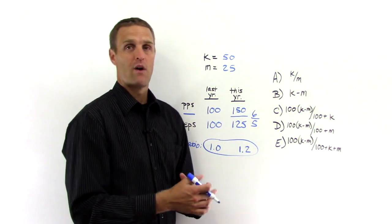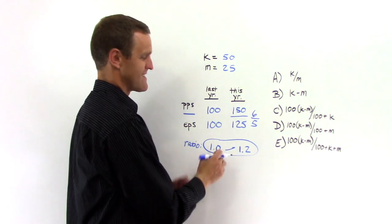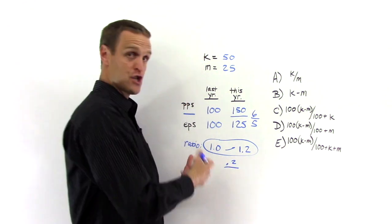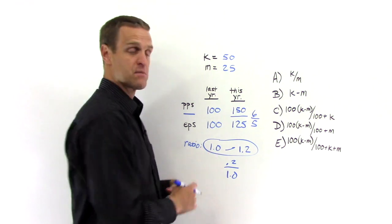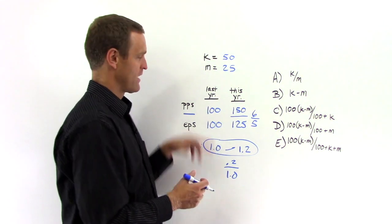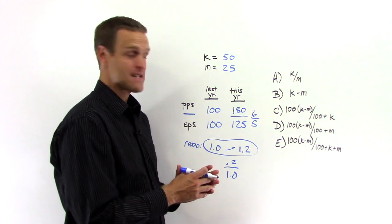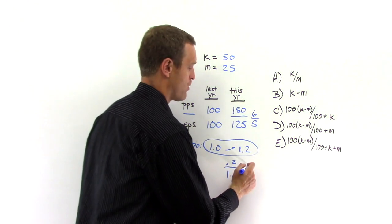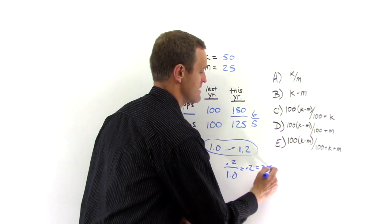So what's the percent change? Reference your percent change formula if you need to. But the percent increase is the net increase, which is 0.2, compared to the starting point, which is 1, 1.0. Helps if you have such an easy starting point. Don't be afraid to let PPS and EPS equal the same thing. So that means the percent increase is just 0.2 times 100%. Obviously, it's a 20% increase.